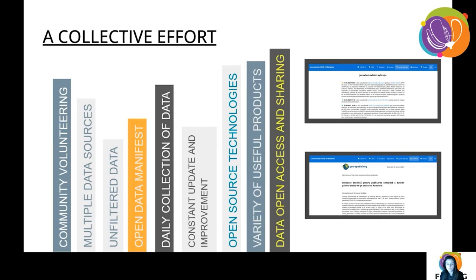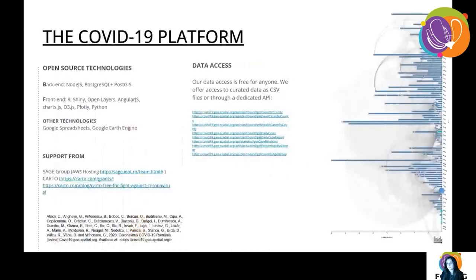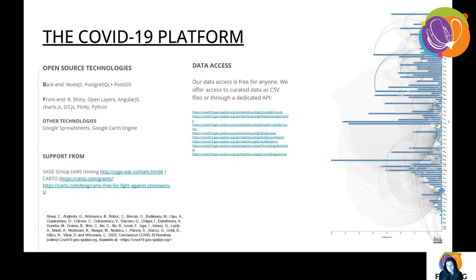Our platform is based on open source technologies. We have a backend that is Node.js, PostgreSQL, and PostGIS. We also collect data in the backend via Google Spreadsheets, and all hosting for our platform is supported generously by the Sage Group from the Western University of Inishwara, going through Amazon Web Services. The front end uses multiple technologies because we had multiple skill sets. Some of us are more familiar with R and Shiny, some with OpenLayers and Angular — basically JavaScript — or Python and Plotly. We also have some maps based on Google Earth Engine with satellite datasets and Carto, which generously supports us through their coronavirus program.